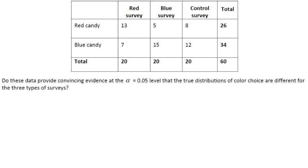So the question then is, do these data actually provide convincing evidence at the alpha equals 0.05 level that the true distributions of color choice are different for the three types of surveys? I mean, just by glancing at the numbers, they look somewhat different, but is that statistically significant? Can we prove that statistically? So if it asks for us to provide convincing evidence, that's our cue to do a significance test. So let's go ahead and start with the state step.